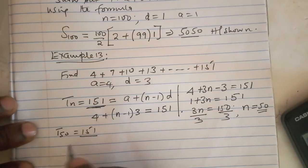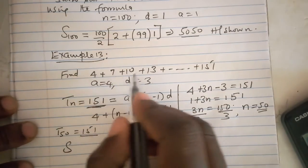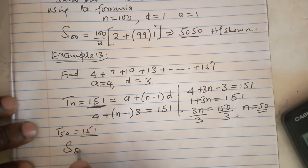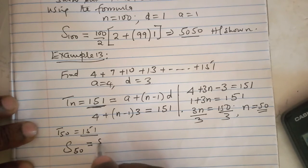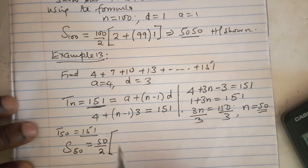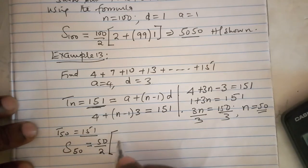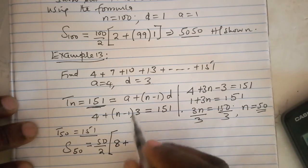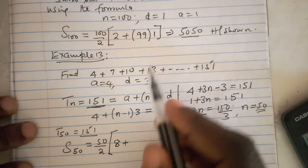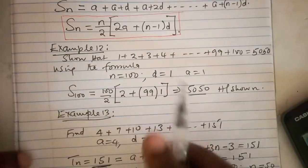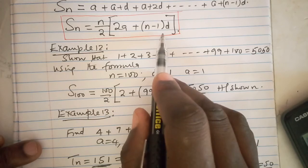The sum of the first 50 terms gives us 50, which is n, divided by 2, multiplied by 2a. Our a is 4, so 2a is 8, plus n minus 1 multiplied by d. This is the formula.